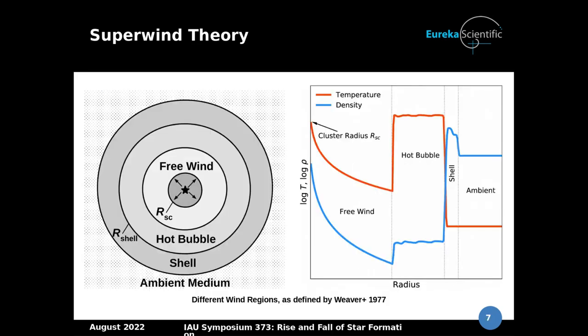Here you see four different regions: the wind region defined by Weaver in 1977, the region of re-expanding wind, the formation of a hot bubble in the temperature profile, and the formation of a shell in the density profile, followed by the ambient medium.